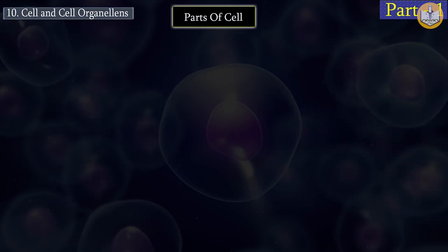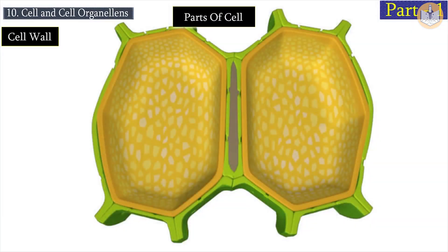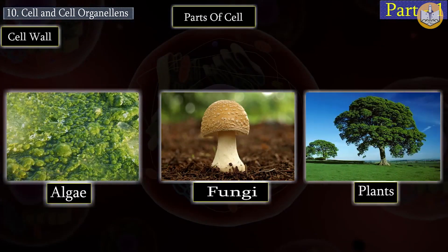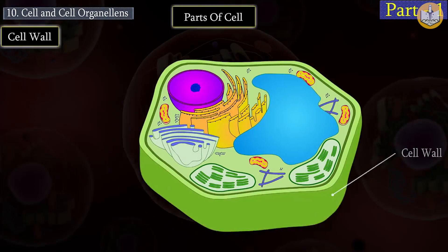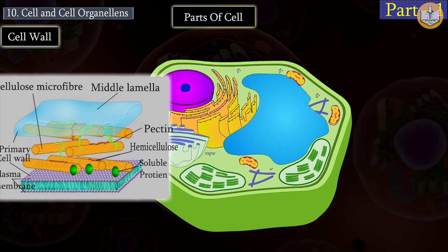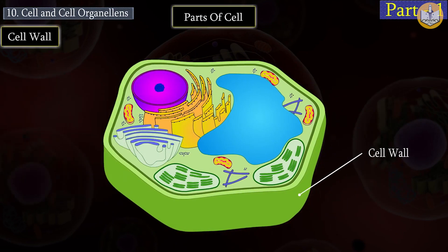The first part of the cell is the cell wall. It is found in cells of algae, fungi, and plants, and is mainly composed of carbohydrates like cellulose and pectin. Polymers like lignin, suberin, and cutin are added to the cell wall as needed. Functions of the cell wall include providing support and protecting the cell by preventing entry of excess water.